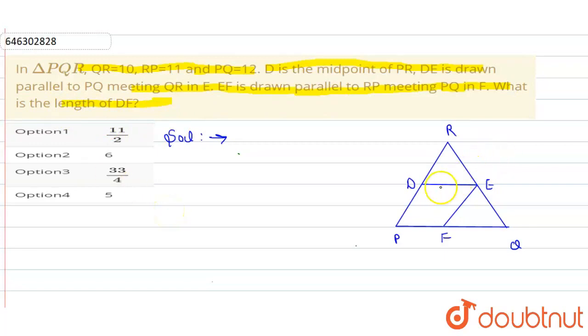What do we have to do first? We have to calculate DF. Now, we're given that D is the midpoint, and DE is parallel to QR.